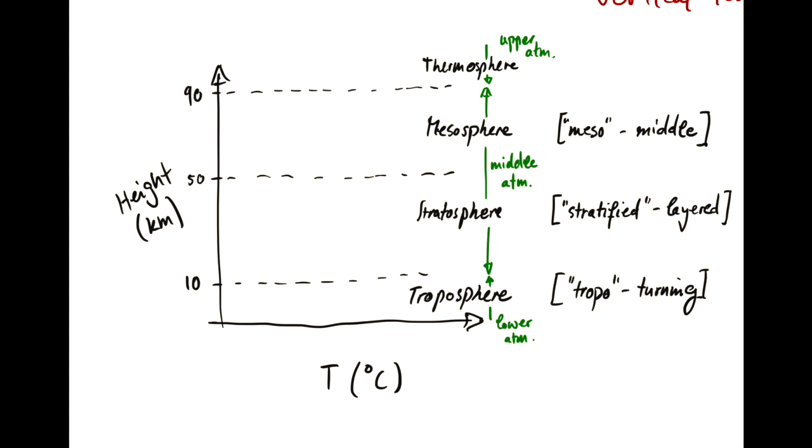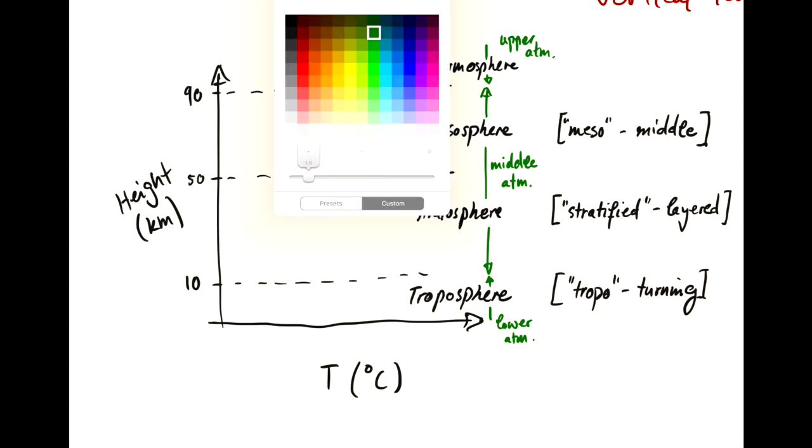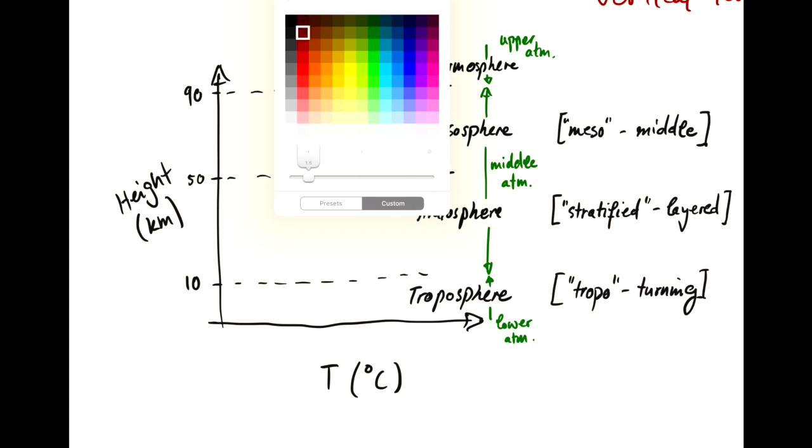So what does the temperature profile look like in the different spheres? Sphere means just region. I'll start with 0 Celsius, 40 Celsius, minus 40, minus 80.